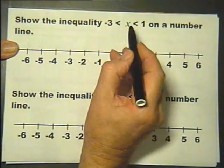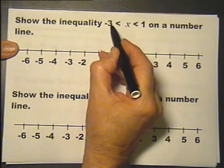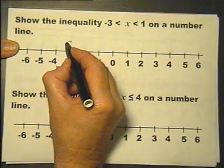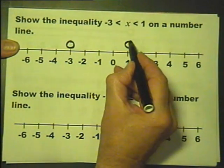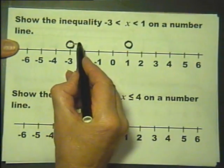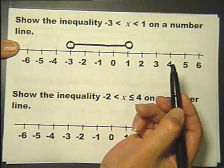Now a double inequality, reading it from the inside: x is between minus 3 and plus 1, doesn't include either. Job done.